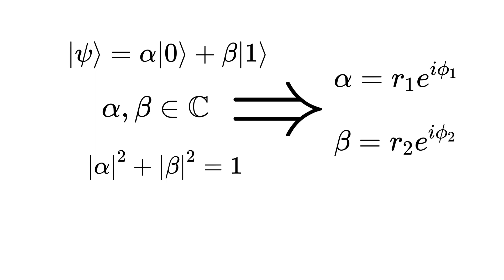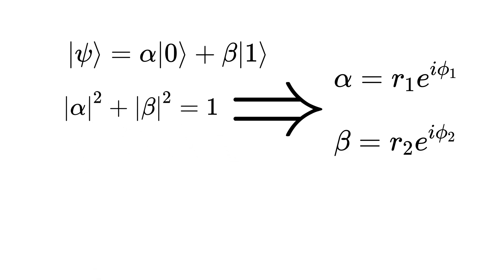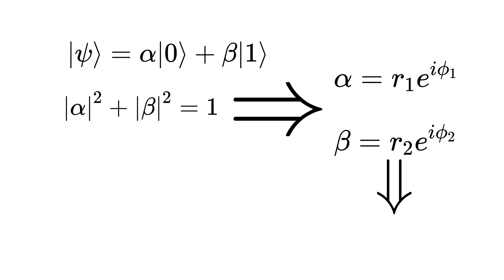We can do the same with beta, which equals r2 times e to the i*phi2, where r2 is the magnitude of beta. Since the magnitude of alpha equals r1 and the magnitude of beta equals r2, we have r1 squared plus r2 squared equal to 1.